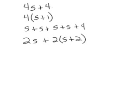The first one here doesn't seem to have anything real easy that we could do, so let's leave that one. The second one — I could distribute the multiplication: four times s is 4s, and four times one is four, keeping my plus sign. It looks like the first two expressions are equivalent because I can make the second one look like the first one by using the distributive property.